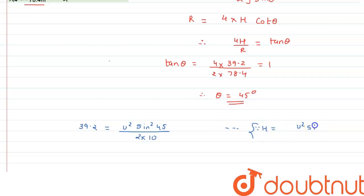Height equals u square sine square theta by 2g. Alright.